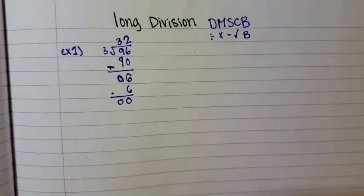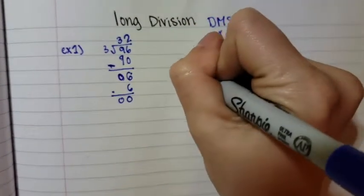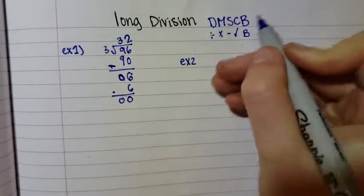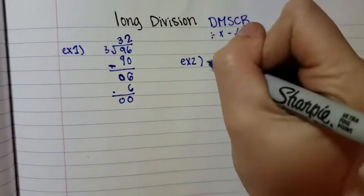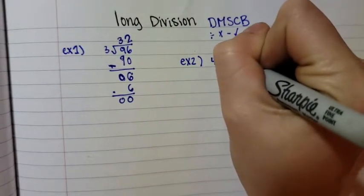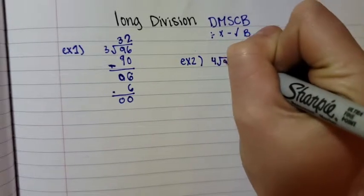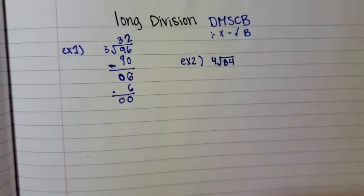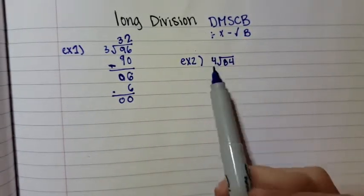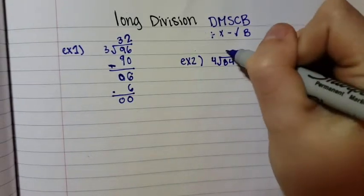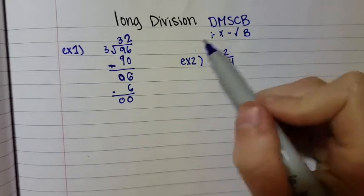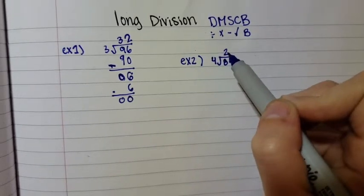We are going to go on to example two. The second example that we are going to do is 84 divided by 4. We're going to ask ourselves how many times can 4 go into 8? 2 times.